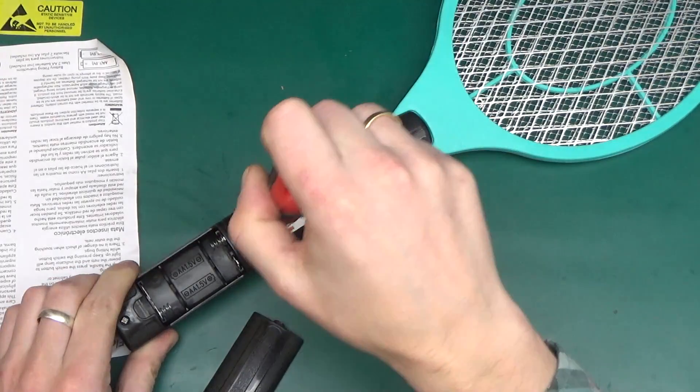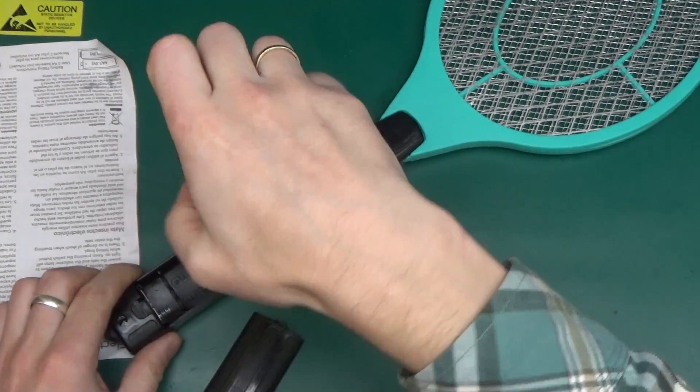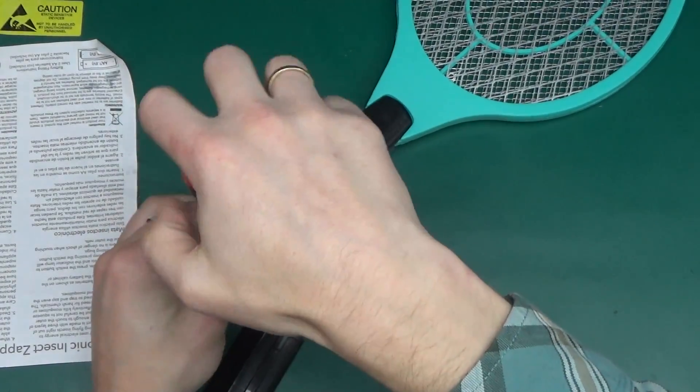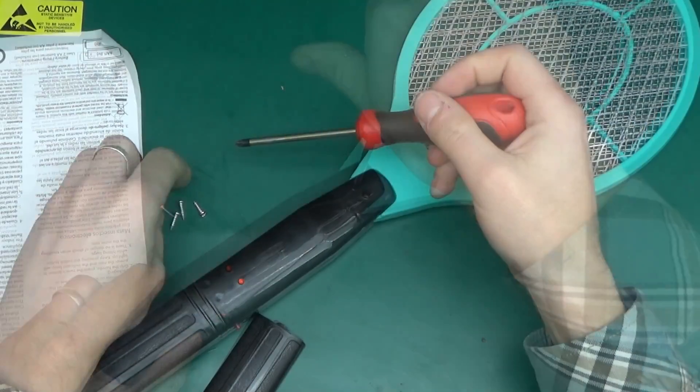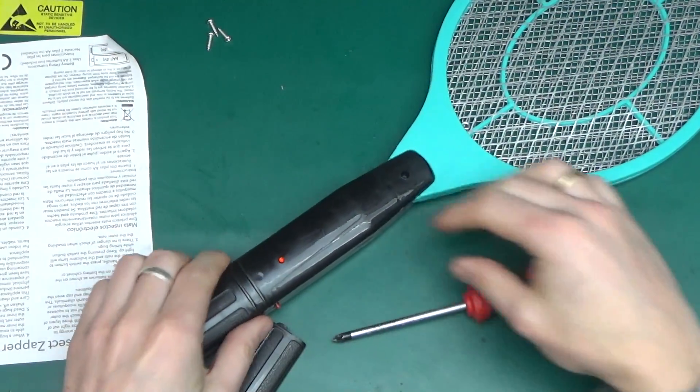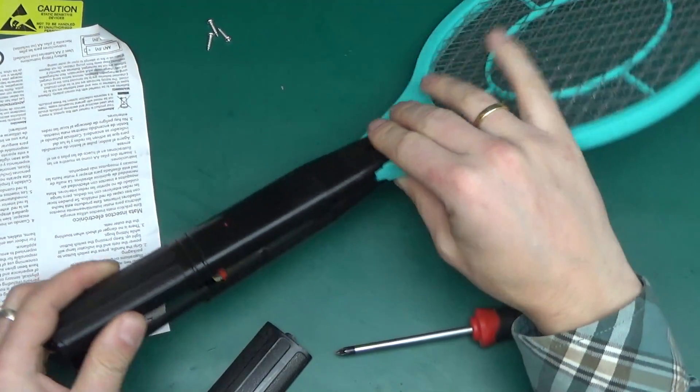This does claim to have 1.5 watts, so that would suggest one milliamp of current on the output. There's one more screw on this side. Three self-tapping horrible screws made out of something resembling metal.